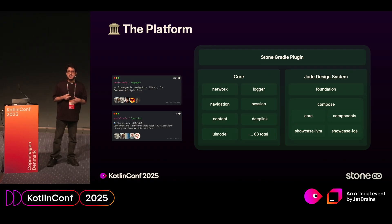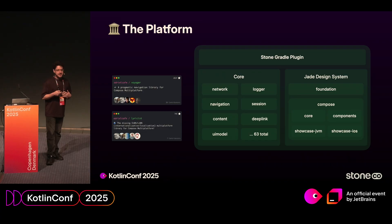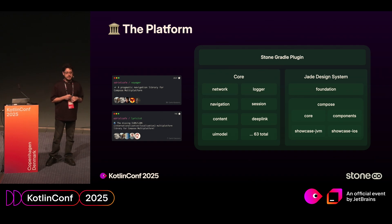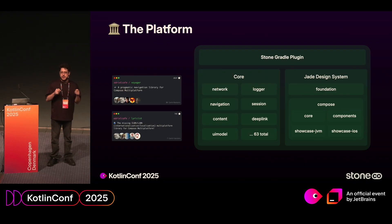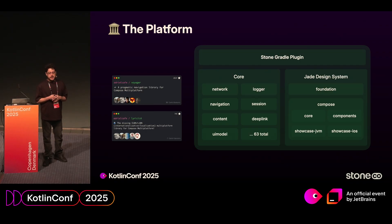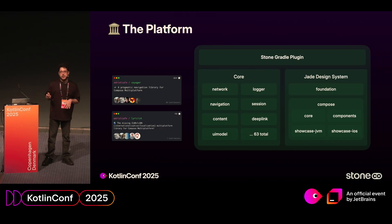The first pillar is the store-and-grade plugins — a bunch of plugins used for maintaining our modules, releasing the apps, controlling versioning, and other tooling. We also have the core part, which is a bunch of agnostic, generic modules that can be used on any application. Some of them include network, navigation, content, UI model, logger, and session — we have a total of 63 core modules. Last but not least, we have our design system, which we have both on Compose and SwiftUI, used across all our features.